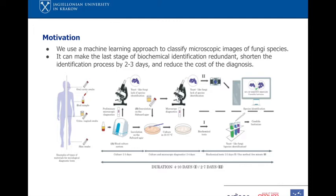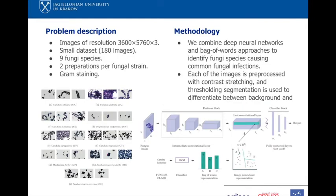Our goal is to use a deep learning approach to classify microscopic images of fungal species obtained from incubation. This approach can replace biochemical tests, shorten required diagnosis time by four days and reduce the costs. We built a digital images of fungal species database consisting of 180 fungi microscopic high-resolution images of nine strains. It contains 20 images from two preparations for each strain. Sample images from the database are presented below on the left.